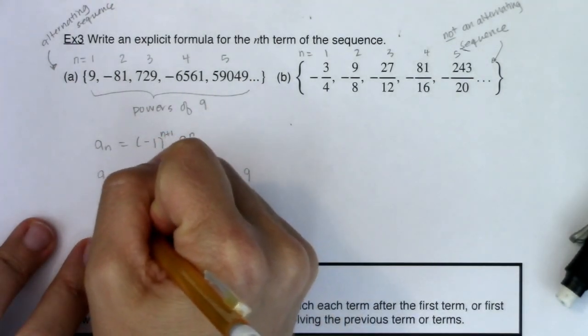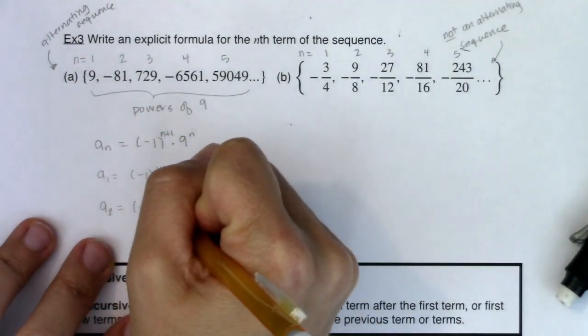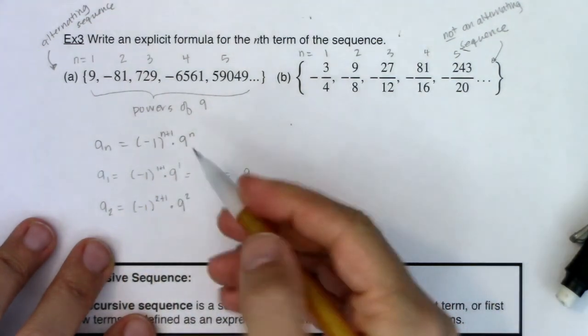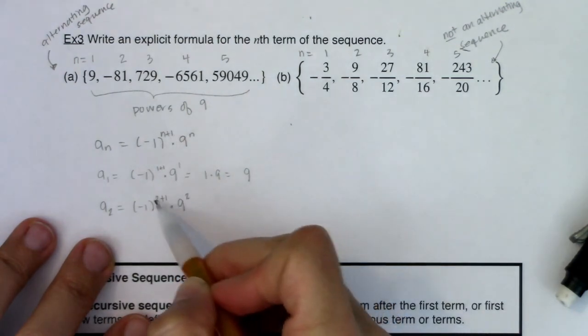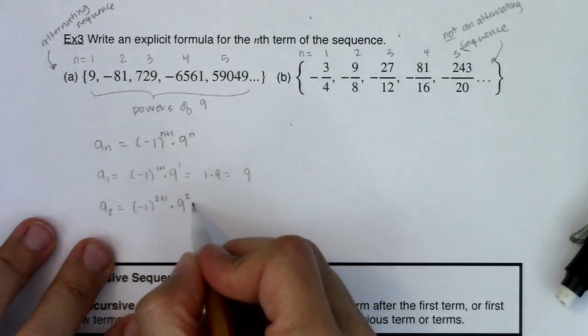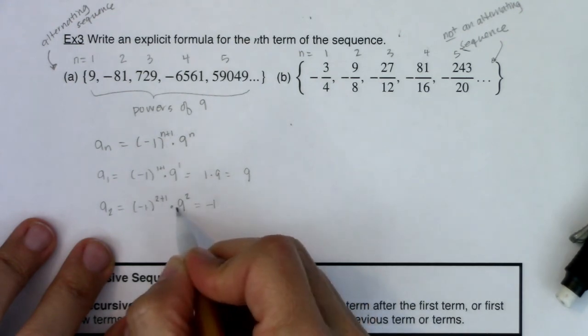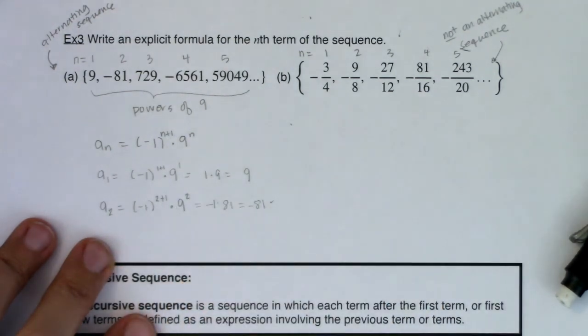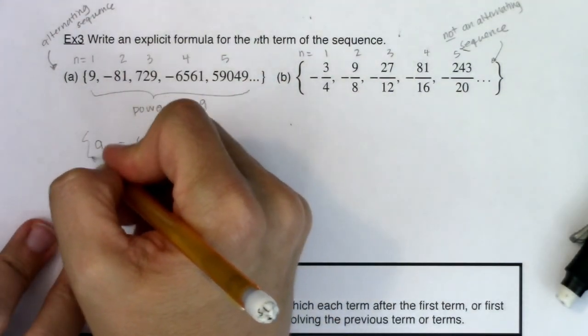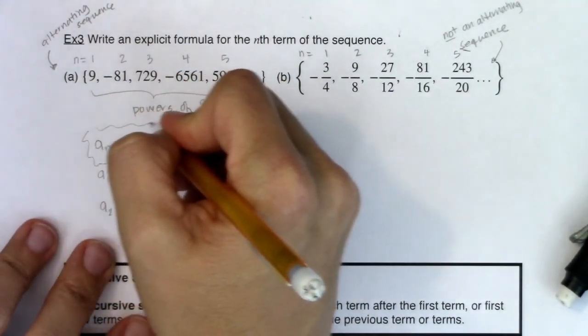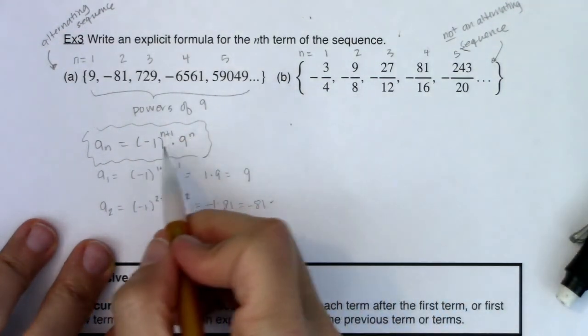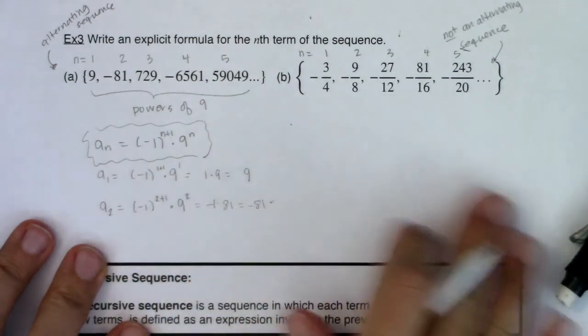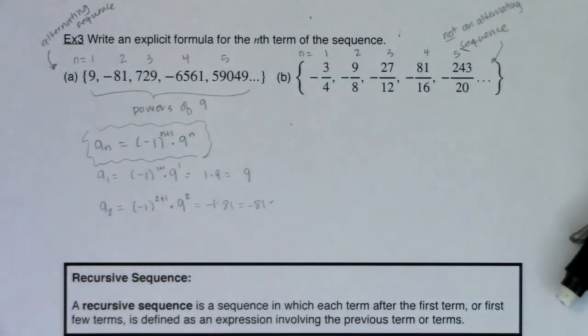Let's test it out with a sub 2. This would be negative 1 to the n plus 1 times 9 to the n. 2 plus 1, 9 squared. Well, this is negative 1 cubed which is negative 1, 9 squared is 81, negative 81, and this is all checking out. So my answer here is this is my explicit formula: a sub n is negative 1 to the n plus 1 times 9 to the n. And this was just check work here.